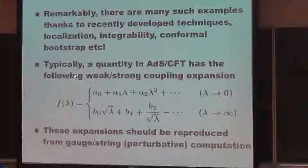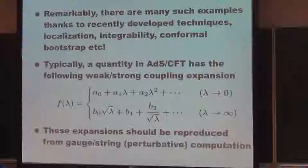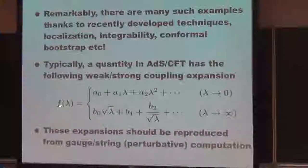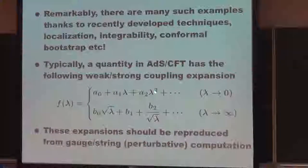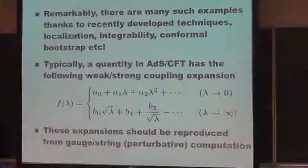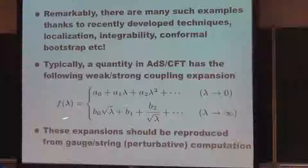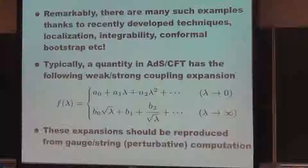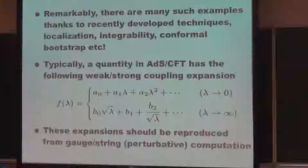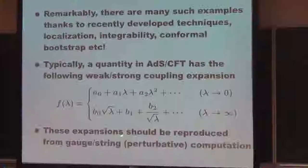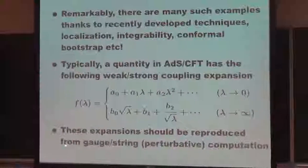Technically, a quantity in N=4 SYM has the following weak and strong coupling expansion. At weak coupling, some quantity F of lambda is expanded by the usual lambda expansion. On the other hand, if we take the large lambda limit, this quantity is expanded by the one over square root of lambda. This should be compared to gauge theory computation or string theory computation.